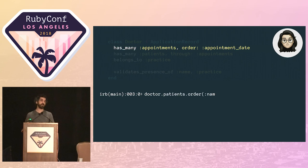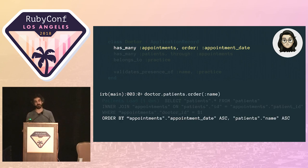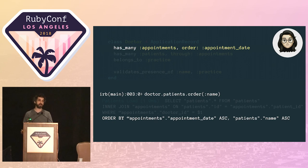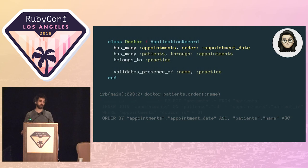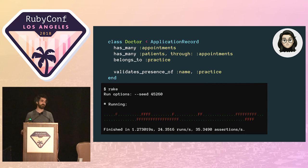But the appointments association had a default ordering on it, ordering the appointments by date. What this meant was, every time the patients association was being called, it would automatically inherit the ordering from the appointments. And any additional order calls would get appended to the end. So instead of returning the patients ordered by their names, they were in fact being ordered by their appointment date and then their name.